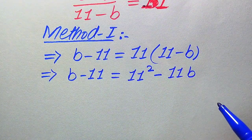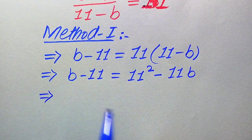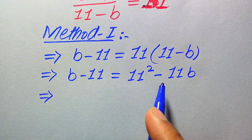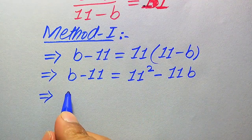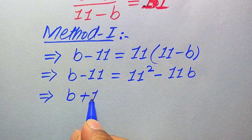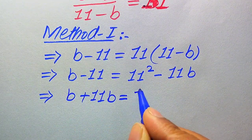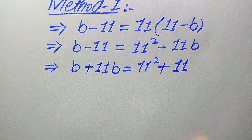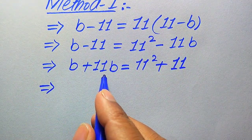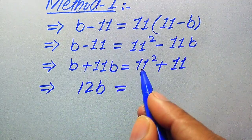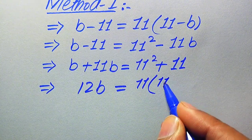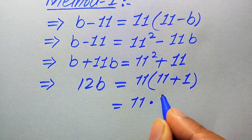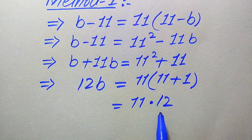In the next step, we combine terms by moving variable terms to the left-hand side and constants to the right-hand side. Moving minus 11b to the left and minus 11 to the right gives us b plus 11b equals 11 squared plus 11. On the left, b plus 11b becomes 12b. On the right, we factor out 11 to get 11 times (11 plus 1).